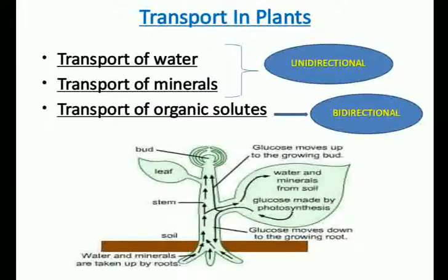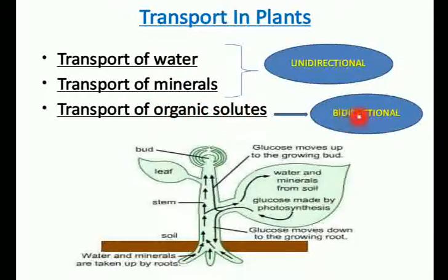In flowering plants, the substances that need to be transported are water, minerals, organic solutes or organic nutrients, and plant growth regulators, which move in very small quantities. Over short distances, some substances move by diffusion or by cytoplasmic streaming supplemented by active transport, whereas transport over long distances is called translocation. The transport of water and minerals is unidirectional, whereas the transport of organic solutes is bidirectional.